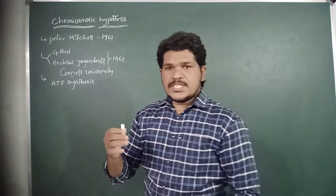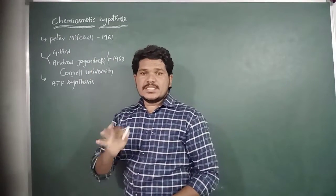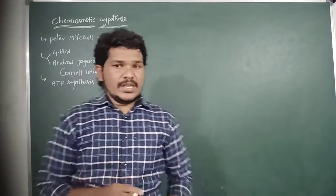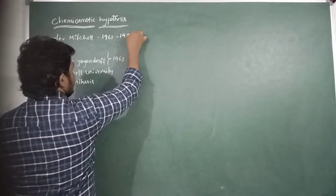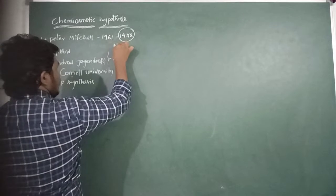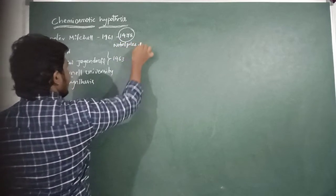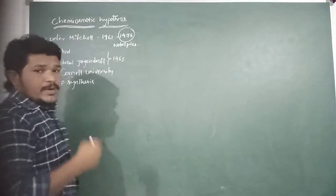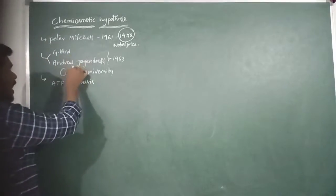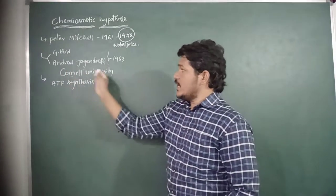The chemiosmotic hypothesis was first explained by scientist Peter Mitchell in the year 1961. For this work, he got the Nobel Prize in the year 1978. It was then confirmed by G. Hind and Andrew Jogunrof in the year 1963 at Cornell University.